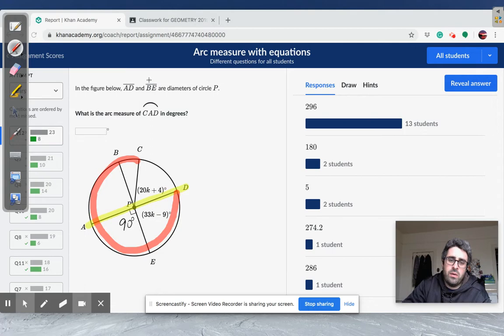And then if I know that BE is a diameter, that means that this also has to be 90 degrees. So this diameter will cut a circle into two equal halves. The circle has 360 degrees. So this entire arc here, BE, has to add up to 180. So if this is 90, 180 minus 90 is 90. So this one here, arc AB, has to also be 90 degrees.